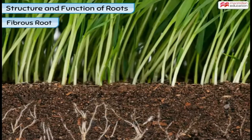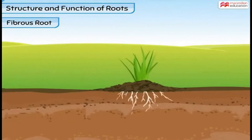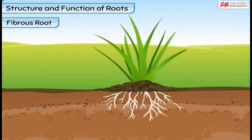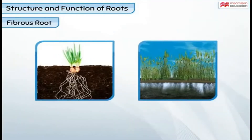Fibrous roots are seen in plants like grass. In this type of root system, numerous roots of the same size grow from the base of the stem. These roots grow sideways in a bunch and do not go very deep into the soil. Some plants that have fibrous roots are onion and wheat.